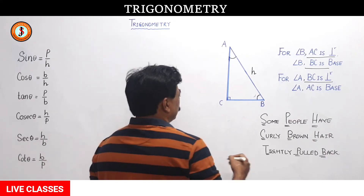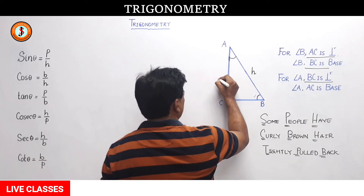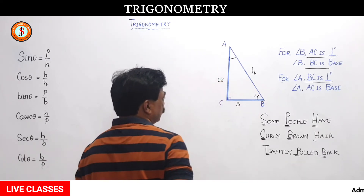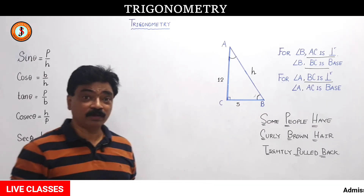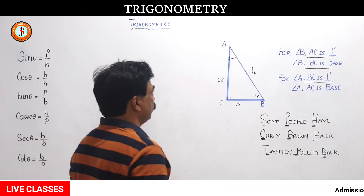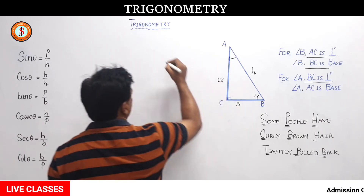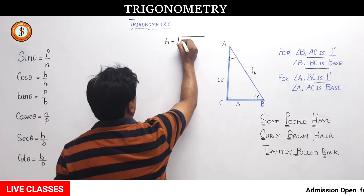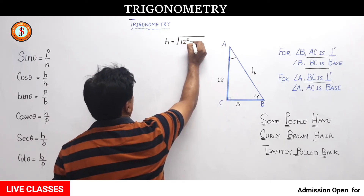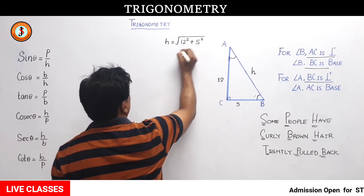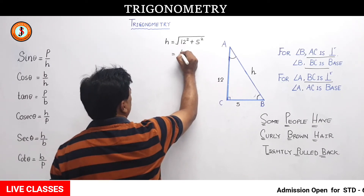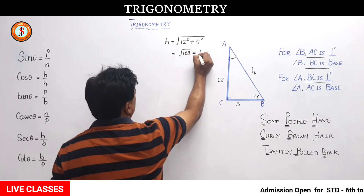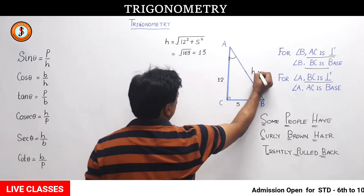Now suppose I put this side as 12 and this as 5 — then obviously the length of the hypotenuse you can find by Pythagoras theorem. Hypotenuse equals under root of P squared plus B squared, so it is under root of 144 plus 25, which is under root of 169, and the square root of 169 is 13. So the hypotenuse becomes 13.